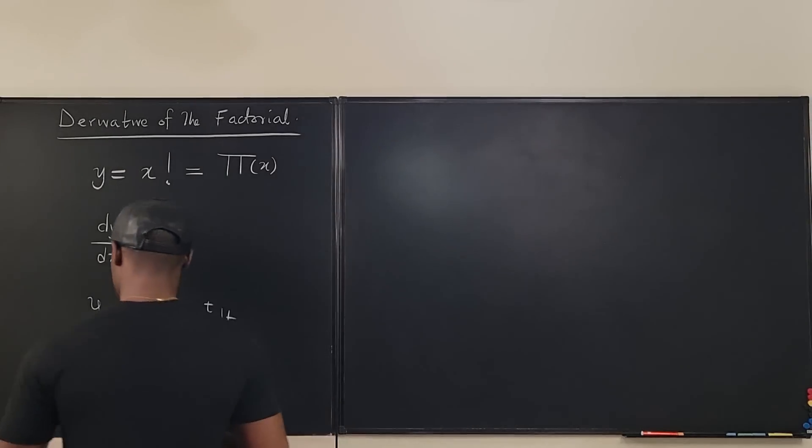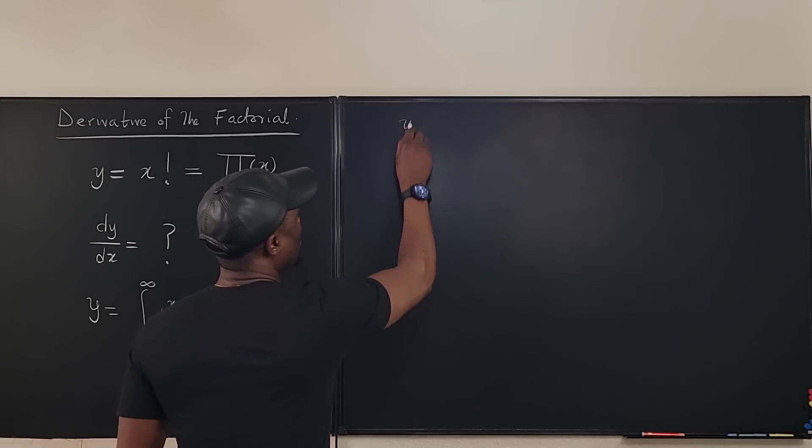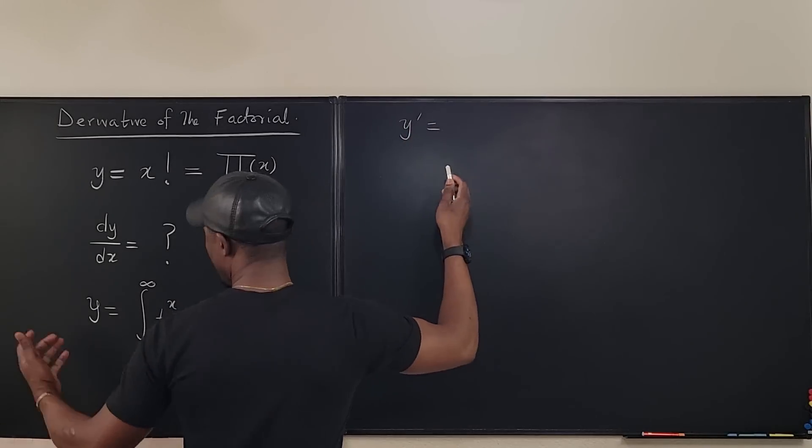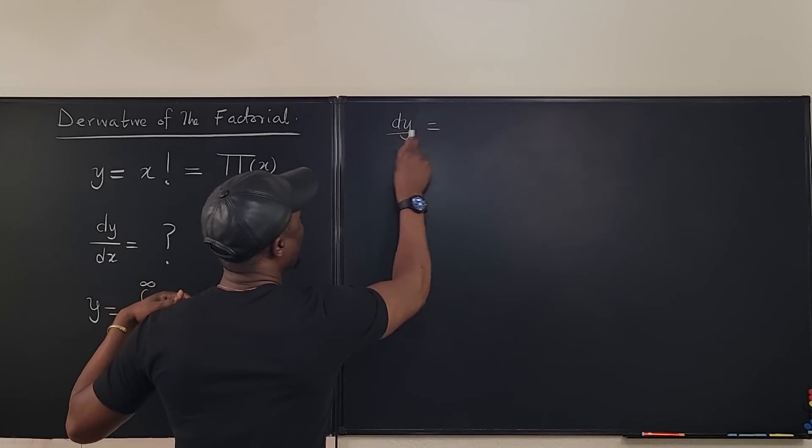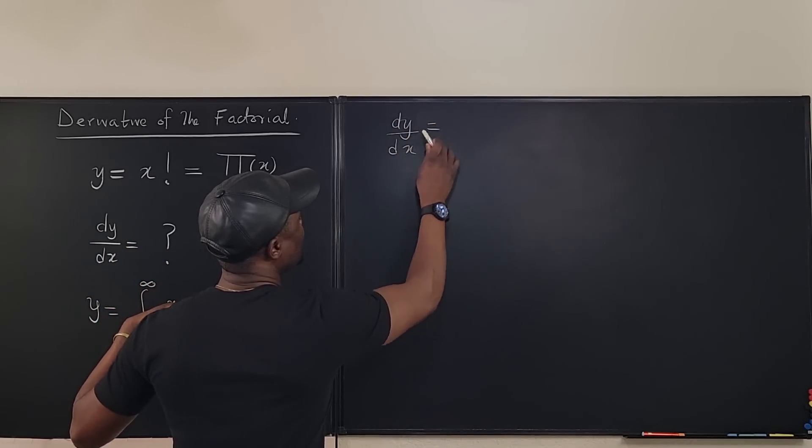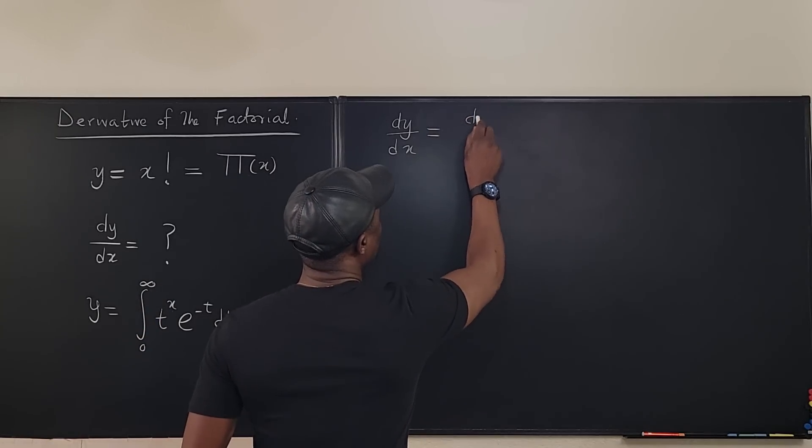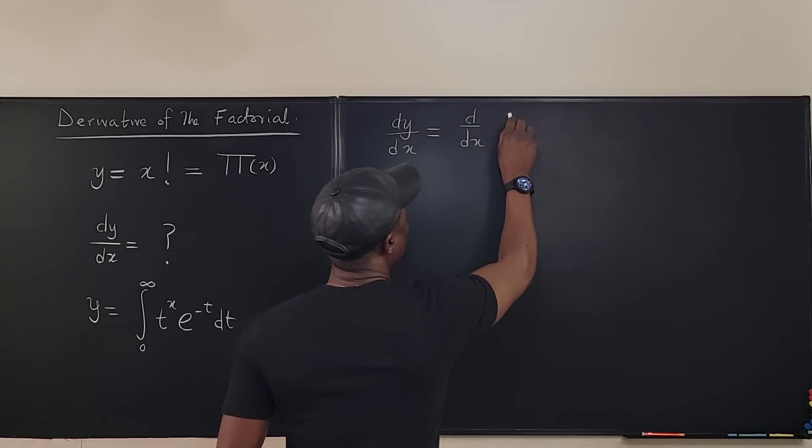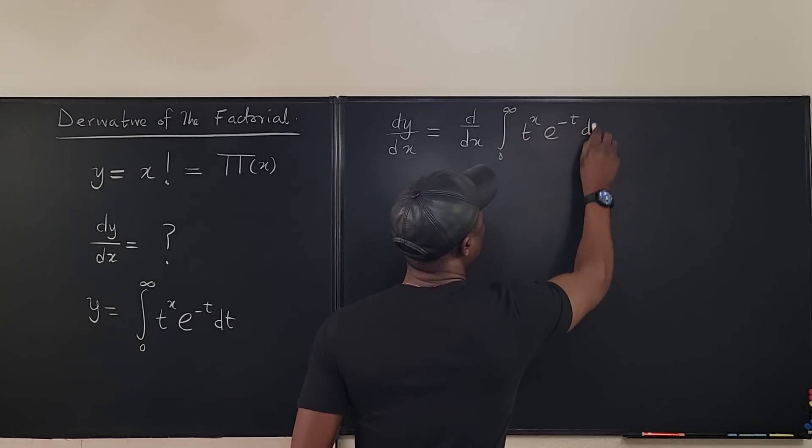Because what we're looking for is this, y prime, let's write it here, y prime, or dy/dx, I think I wrote dy/dx. Let's write dy/dx. dy/dx is basically equal to d/dx of the integral from zero to infinity of t to the x e to the negative t dt.